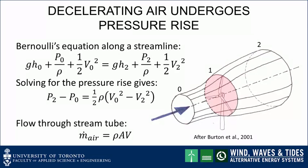Note that the pressure rise in this circumstance is very small compared to atmospheric pressure. We are now in a position to explain why the cross-sectional area at plane 2 is larger than at plane 0. Considering the mass flow rate equation, m-dot equals rho A v, density doesn't change much through the wind turbine. If velocity decreases from plane 0 to plane 2, then the cross-sectional area A must increase to deliver the same mass flow rate through the stream tube.